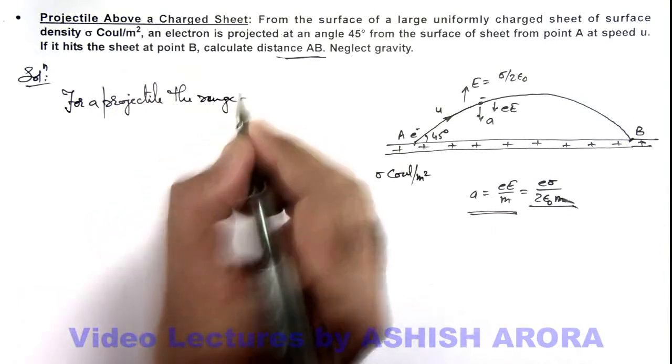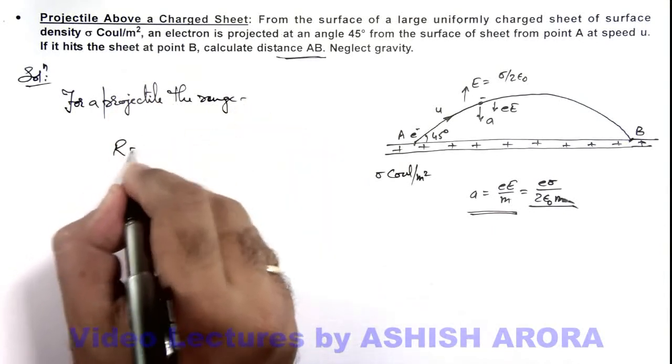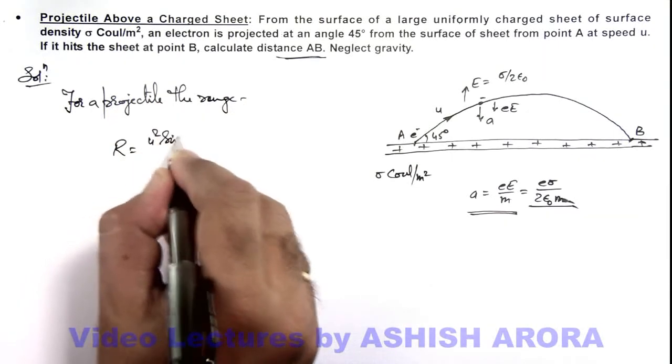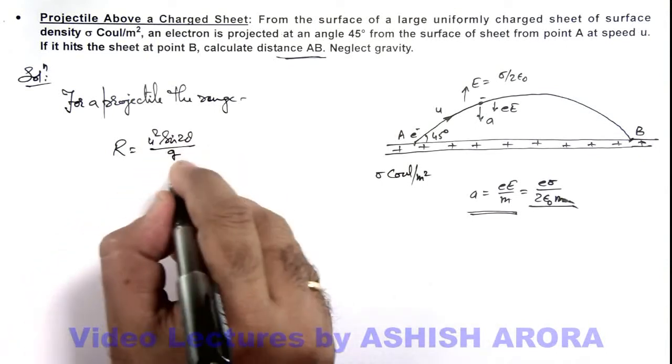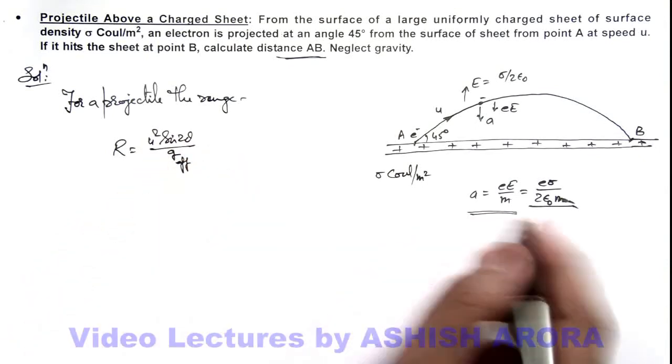The range is given by R equals u² sin(2θ)/g, or here we use g effective or the acceleration.